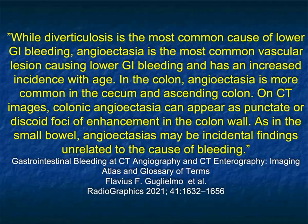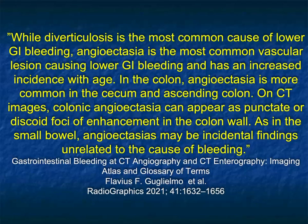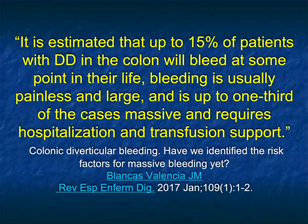While diverticulosis is the most common cause of lower GI bleeding, angioectasia is the most common vascular lesion causing lower GI bleeding, and again it's an older population. You're not going to see angiodysplasia in a 30-year-old, but more commonly in a 70- or 80-year-old. Think about the right colon — just like the past case, it was the cecum and ascending colon. The case I just showed you really is the most classic of appearances.